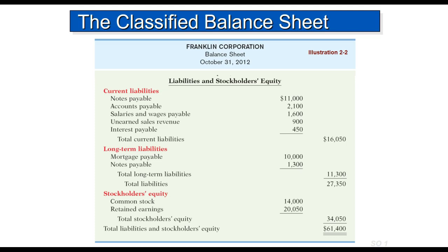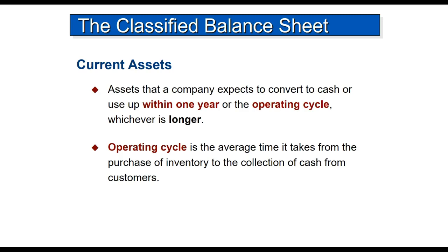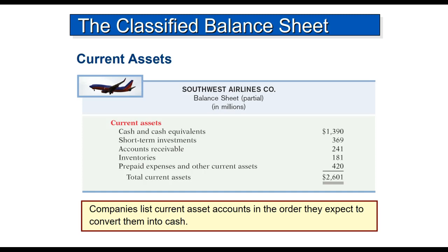Current assets are assets that our company expects to convert to cash within one year or the operating cycle — generally it's one year. The operating cycle is the average time it takes to purchase inventory, sell it, and then collect the cash. Here we have Southwest Airlines — you can see the current assets: cash and cash equivalents, which might be money market funds; short-term investments; accounts receivable; inventories; and prepaid expenses. They are listed in the order they are expected to be converted back into cash — that is what is meant by liquidity.